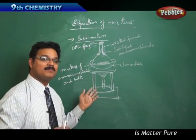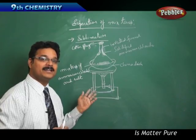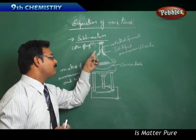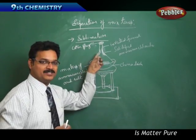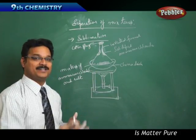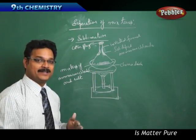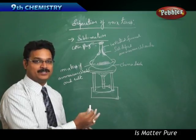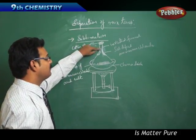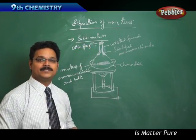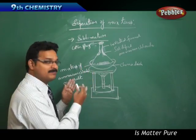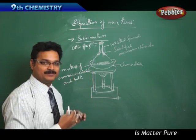Sublimation is applicable here because the ammonium chloride first goes to the vapor state — the gaseous state — and then converts directly from gaseous state to solid state, forming solid ammonium chloride on the walls of the funnel. In that way we separate the ammonium chloride from the mixture.